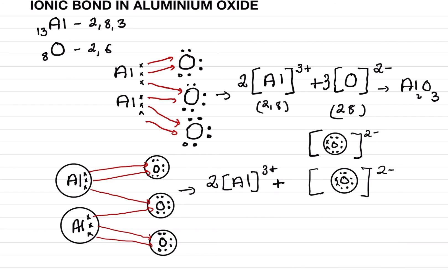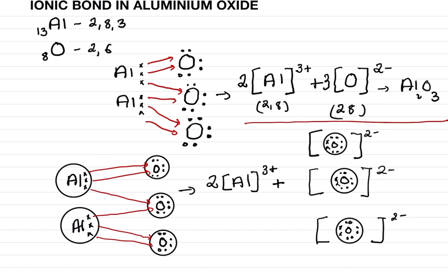Finally, draw the third oxygen, showing its six electrons (1–6) and two cross electrons received from aluminium, and 2−. This is the second method of showing the ionic bond in aluminium oxide. We know that this is the first process and this is the second process. The final formula is Al₂O₃. I hope this is clear to you.